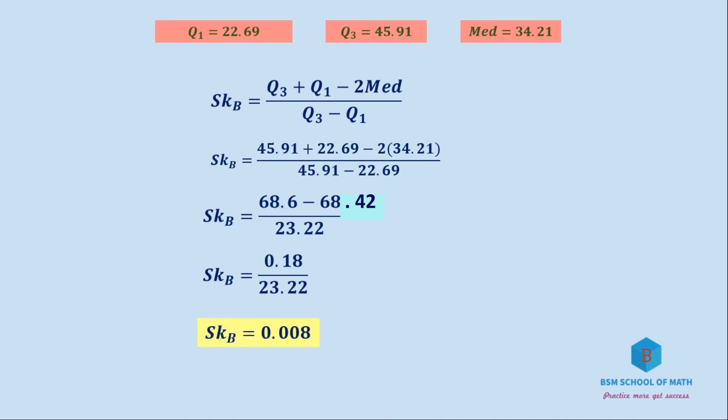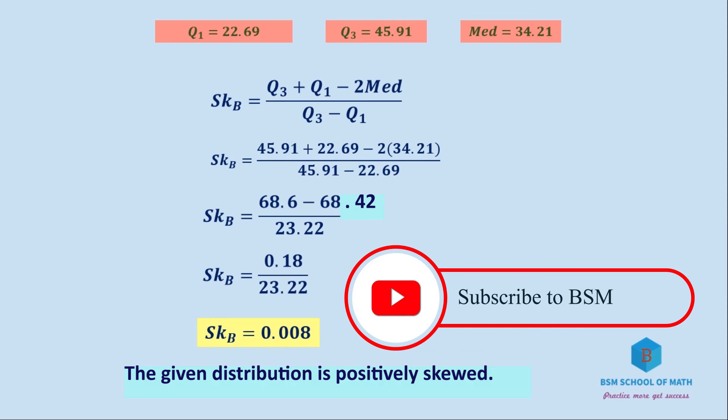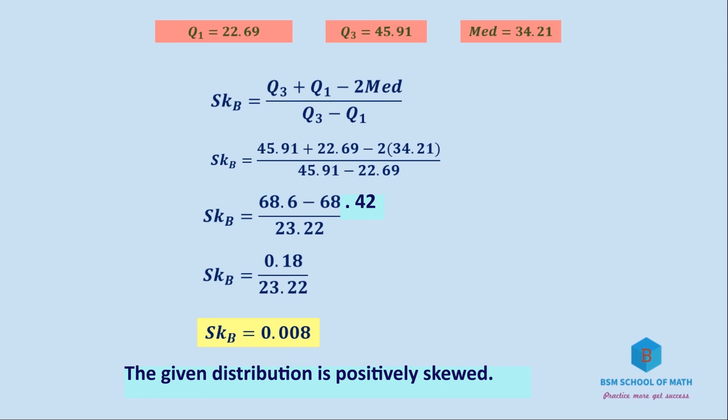Substituting into the formula: SK_B = (45.91 + 22.69 - 2(34.21))/(45.91 - 22.69) = 0.18/23.22 = 0.08. Since this is a positive value, the given distribution is positively skewed. Thank you for watching, subscribe to my channel, see you in another video.